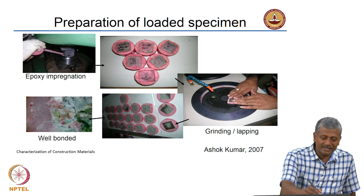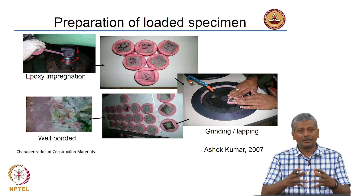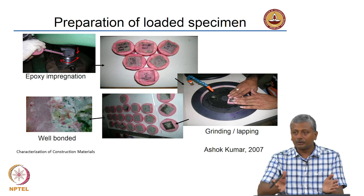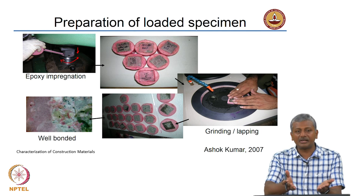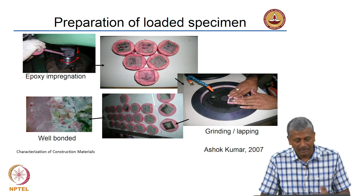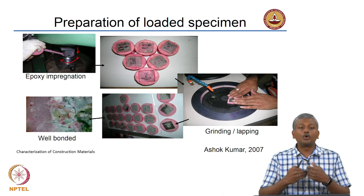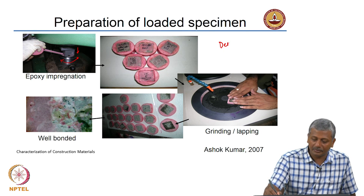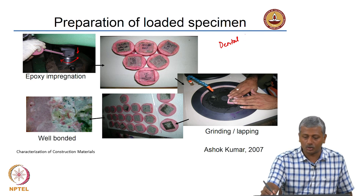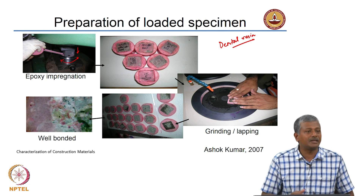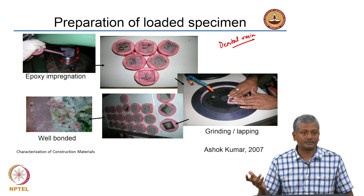As the specimen was being loaded, we had a sleeve put around it. At a particular load — say 30% or 60% of the ultimate load — we stopped the instrument without unloading, because if you unload, some cracks may close depending on the state of deterioration in the concrete. So at that load level we poured epoxy through the sleeve, choosing dental resin, which cures very fast — only about 5 to 10 minutes — whereas typical epoxies take a few hours.